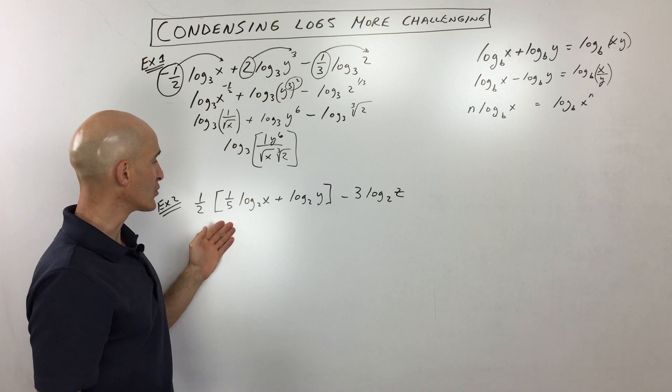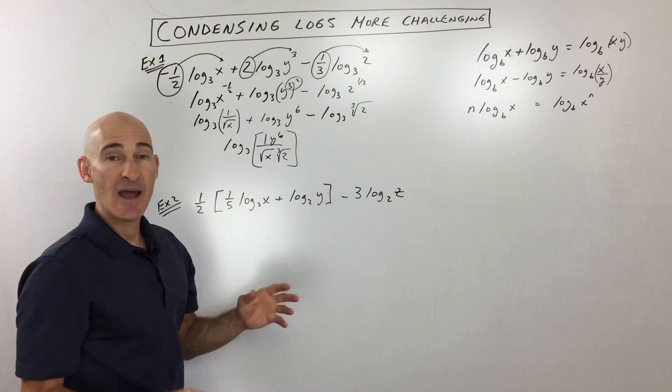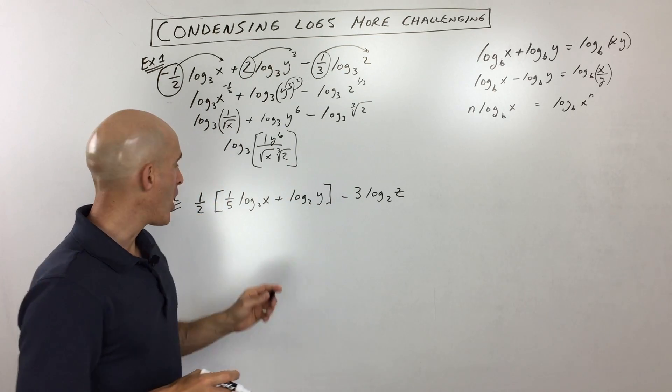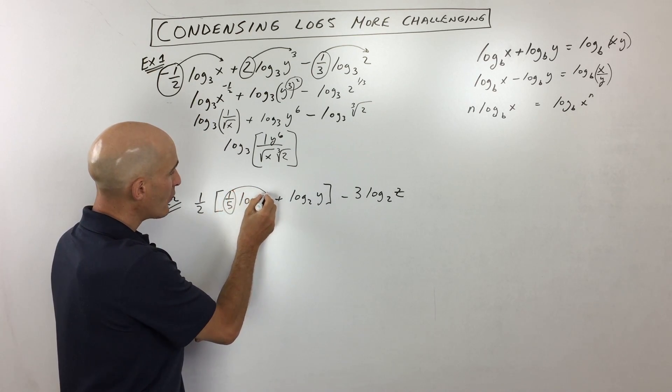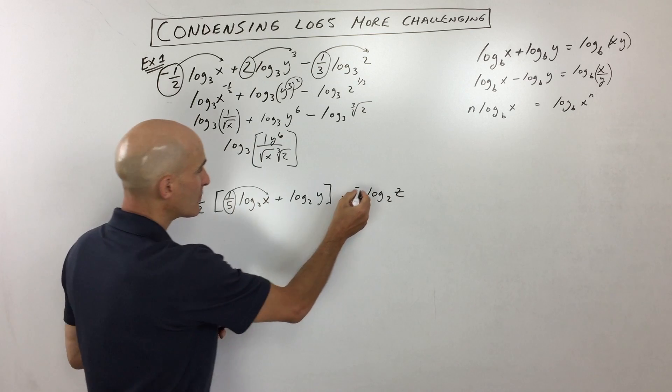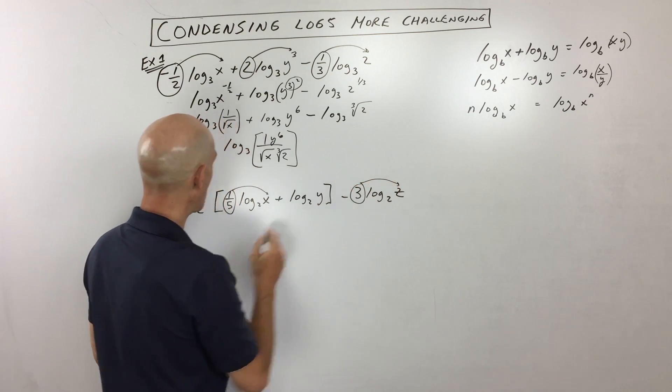So for example number 2, same idea, we want to try to condense it down into one log. So the first thing I'm going to do here is I'm going to bring these coefficients up as powers. So I'm going to take the 3, bring that up as a power, and so on.